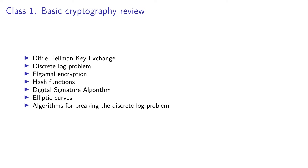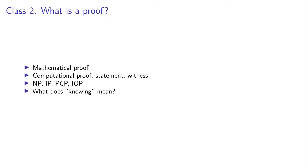Then there will be a specific class — which may actually end up being shorter than 60 minutes — on the topic: what is a proof? We will start with the mathematical idea of a proof, then see how in computer science we deal with proofs. We'll define what a witness is, and cover proof systems: NP (Non-Deterministic Polynomial Time), IP (Interactive Proof), Probabilistically Checkable Proofs, and Interactive Oracle Proof. We are also going to explain what it means to know something.